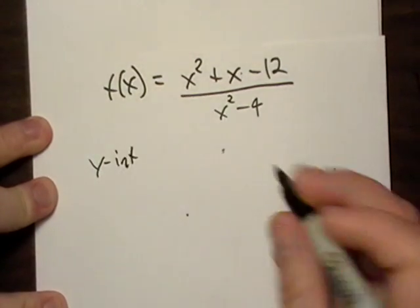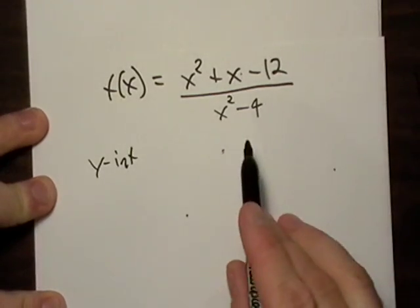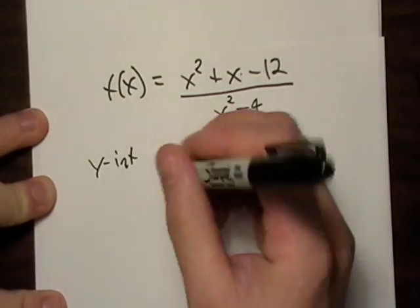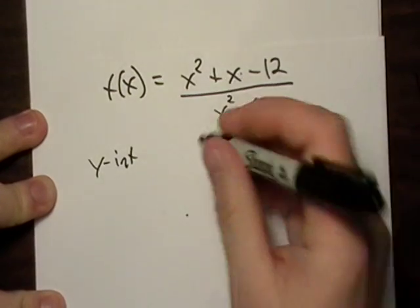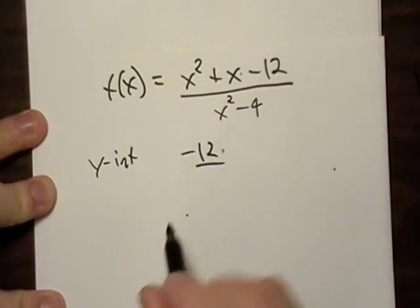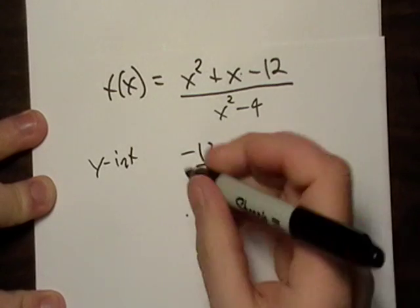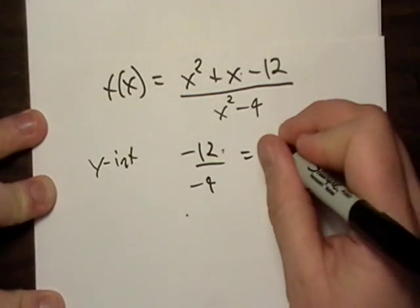First thing I want to do, I want to get that y-intercept. Let's dig that out of there. That's just f of 0. That'll be 0 plus 0 minus 12, 0 minus 4 is negative 4. That's 3. We'll say y equals 3.